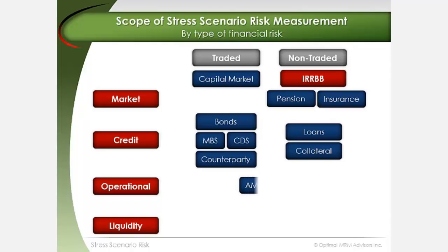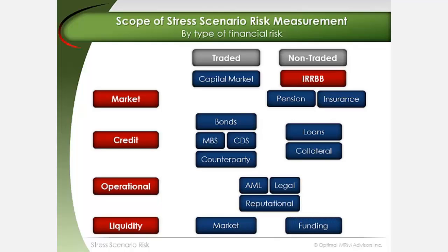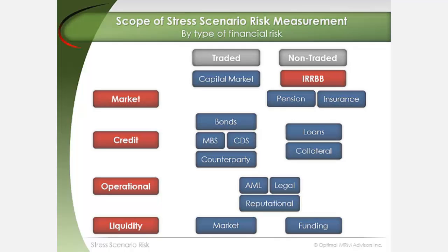Operational Stress Scenario Risk Measurement includes anti-money laundering and other similar qualitative risk exposure. Liquidity Stress Scenario Risk Measurement includes market liquidity — the ability to exit positions in the market — and funding liquidity — the ability to meet liability commitments.